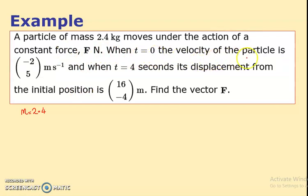When t equals naught, the velocity of the particle is minus 2i plus 5j. So that's almost like a u. I do think this is a SUVAT question. It's just this word here constant force. And they've kind of given me a u. They say when t equals 4, its displacement is 16i minus 4j. Find the vector F. So I think I need to find the a.